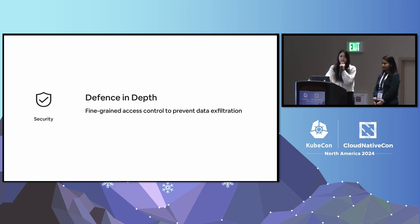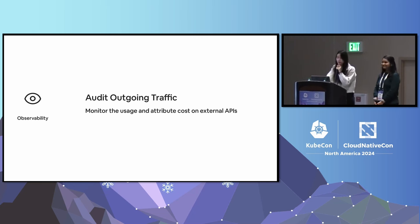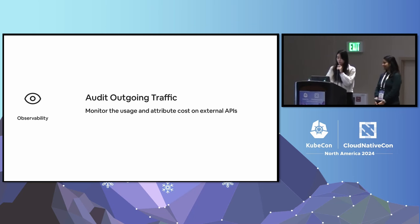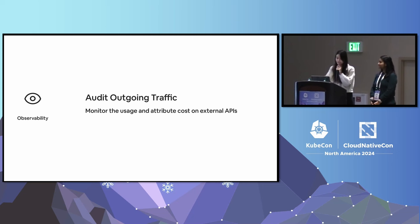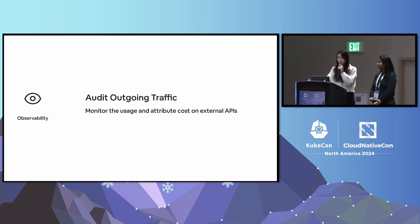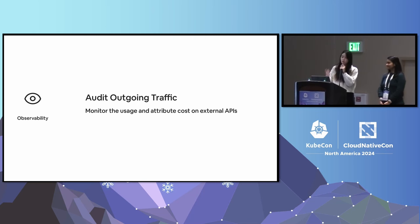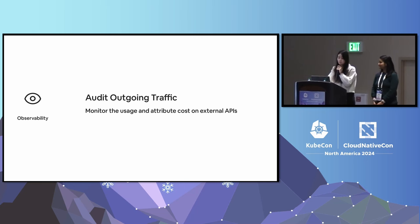Secondly, monitoring is also a big plus. With the growth in the AI area and the emergence of large language model usage, there is an escalating demand for calling external APIs. Having something to audit and track the costs associated with such activities becomes more and more crucial. The logs and metrics provided by an egress gateway are going to be very helpful for that.